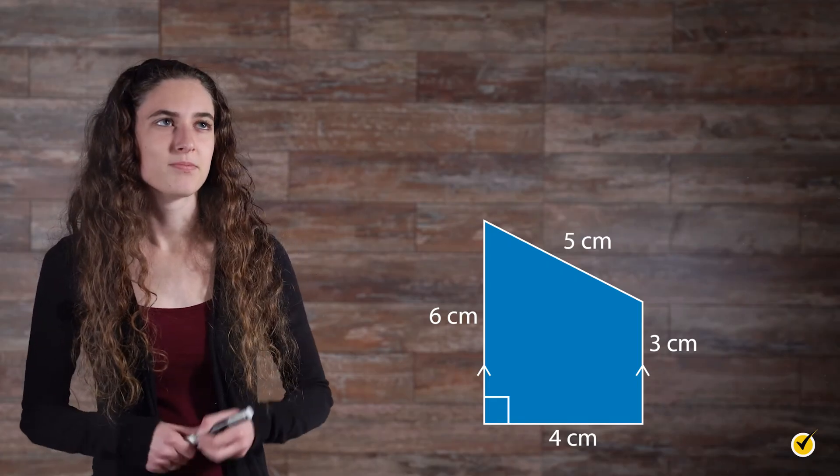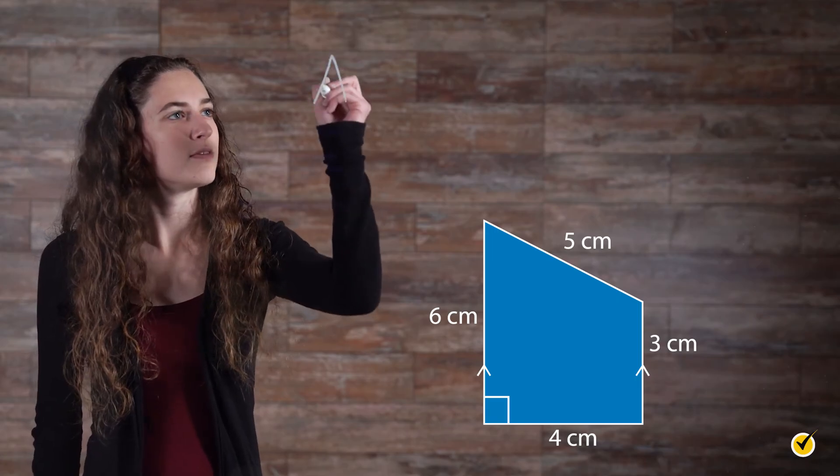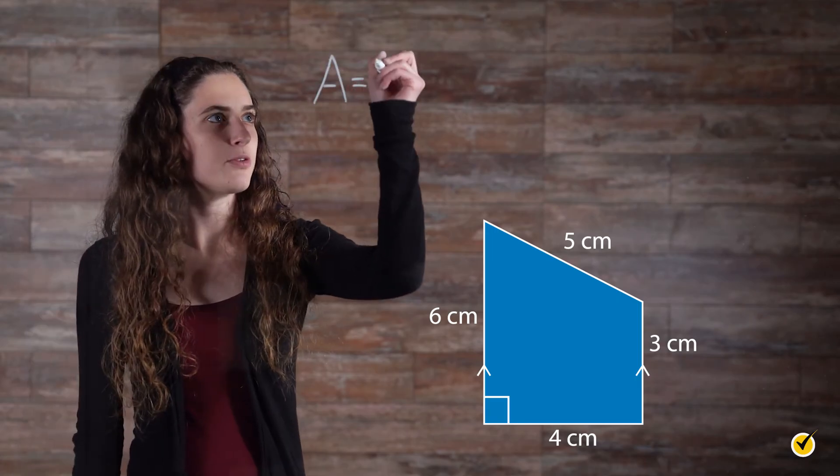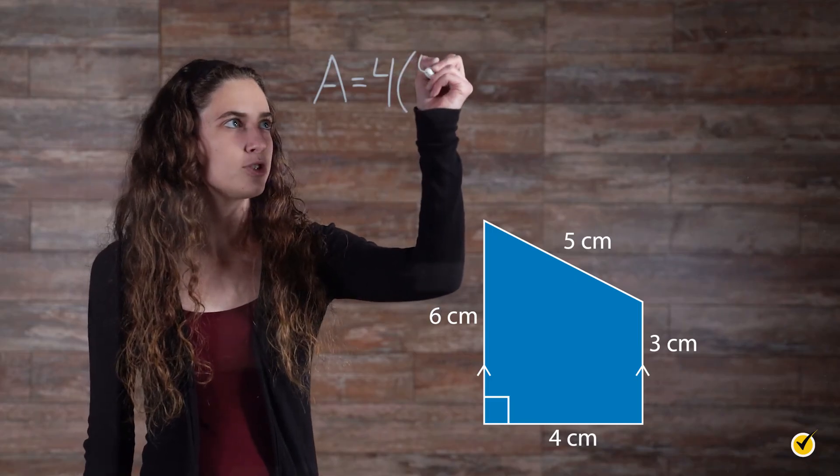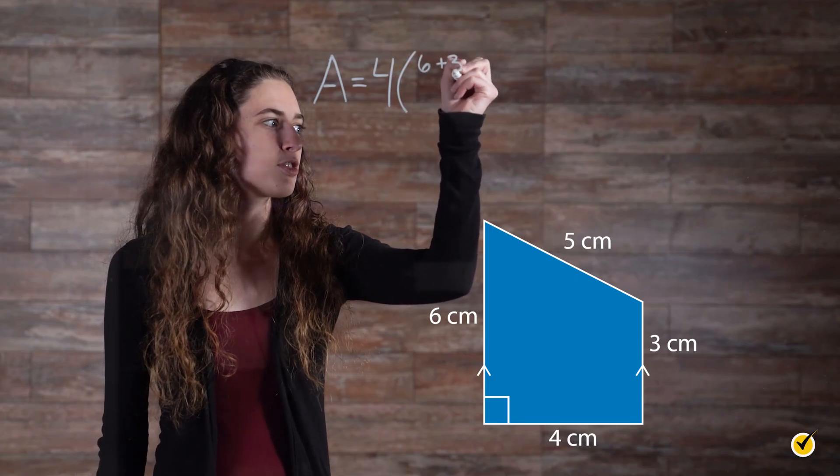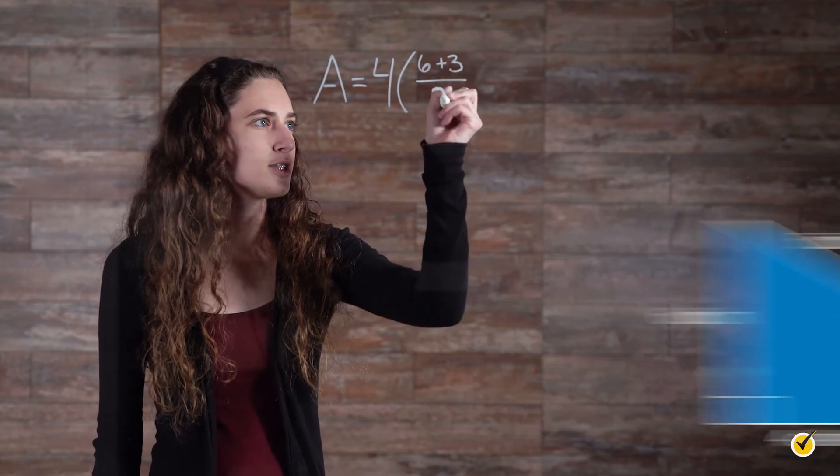Let's plug it all in. The area of the trapezoid equals the height, which is 4, times base one, which is 6, plus base two, which is 3, divided by 2.